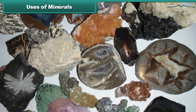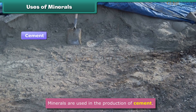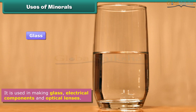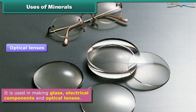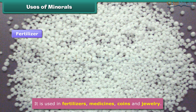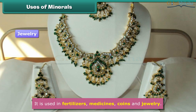Minerals play an important role in our lives. Minerals are used in the production of cement. They are used in making glass, electrical components, and optical lenses. These are also used in fertilizers, medicines, coins, and jewelry.